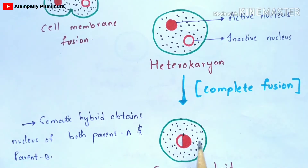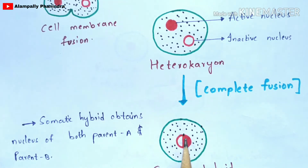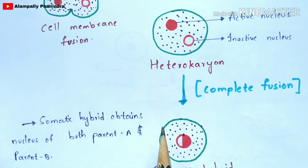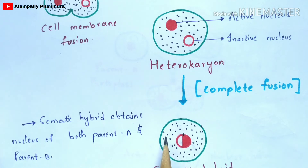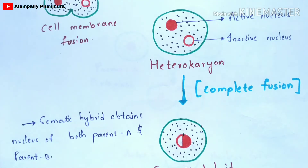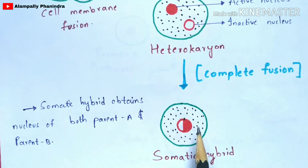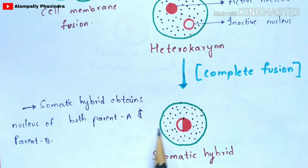After complete fusion, a single nucleus is formed that exhibits properties of both parents — the active nucleus from Parent A and the inactive nucleus from Parent B. The somatic hybrid contains the nucleus of both Parent A and Parent B. The shaded region represents the active nucleus from Parent A and the unshaded region represents the inactive nucleus from Parent B. This hybrid formed is called a somatic hybrid.